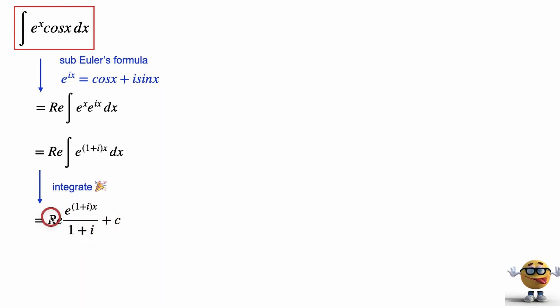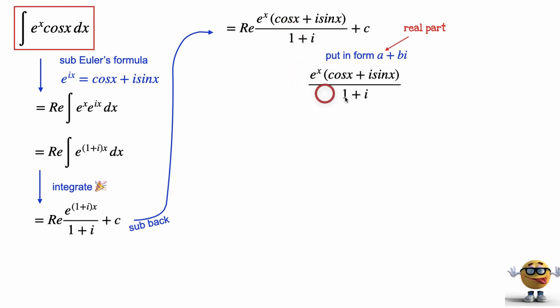Now, we have to deal with this real part. So we're going to sub back Euler's formula to get our cosines and sines part right here. Now, we want the real portion of this. How do we do that? Well, we put it in the form of a plus bi, where a is the real part, b is the imaginary part. So to get this fraction into this form right here, we need to get rid of the denominator. And to do that, we will multiply the top and bottom by the conjugate.